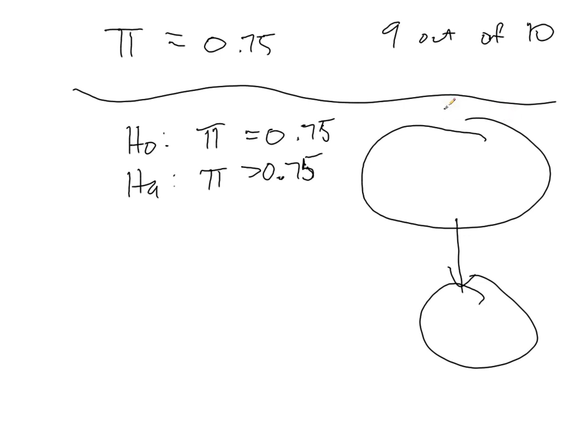So our population is all diabetes patients, and our sample is going to be the 10 diabetes patients. Now, as discussed earlier, we don't want to conclude a rejected null hypothesis if the evidence is not strong enough.